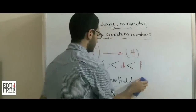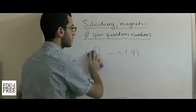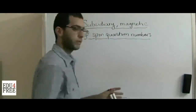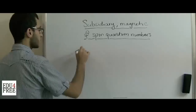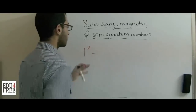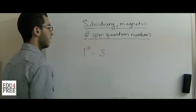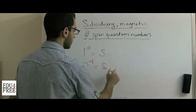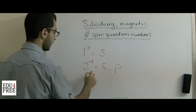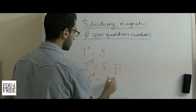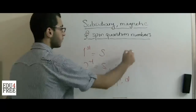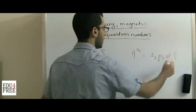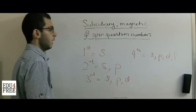Now we can say which sublevels are found in each main energy level. The first energy level contains one subsidiary quantum number: S. The second contains two: S and P. The third contains three: S, P, and D. The fourth contains four: S, P, D, and F, and so on.